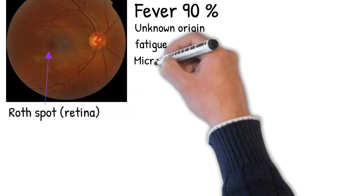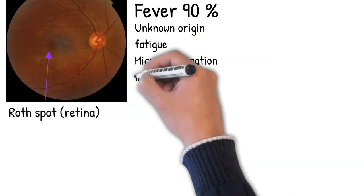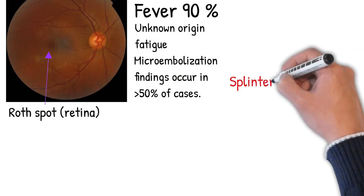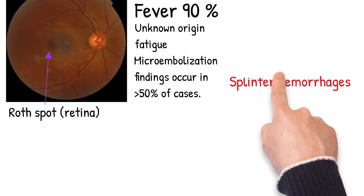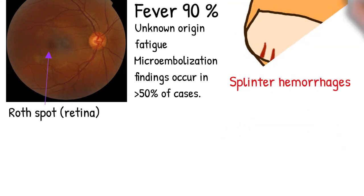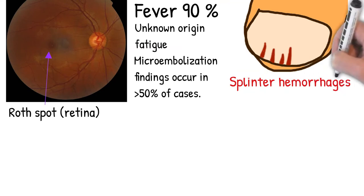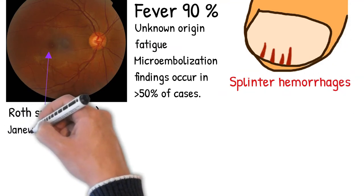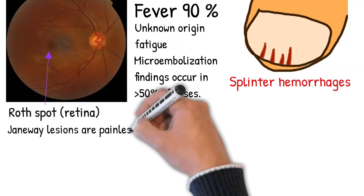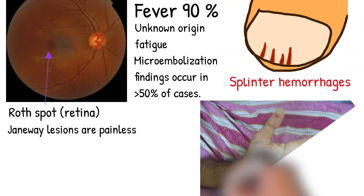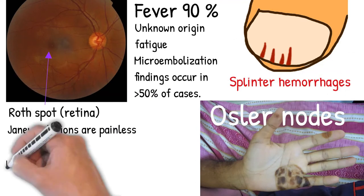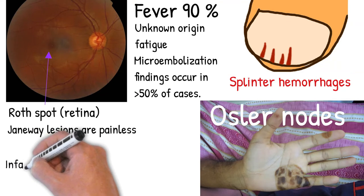Roth spots are an irregular red area with a central white dot on the retina. Microembolization findings occur in greater than 50% of cases. Splinter hemorrhages are linear hemorrhages present in the nail beds. Janeway lesions are painless areas of hemorrhage on the palms and soles of the feet, seen in 10% of cases. Osler nodes are painful hemorrhagic nodules on the pads of the fingers or toes.